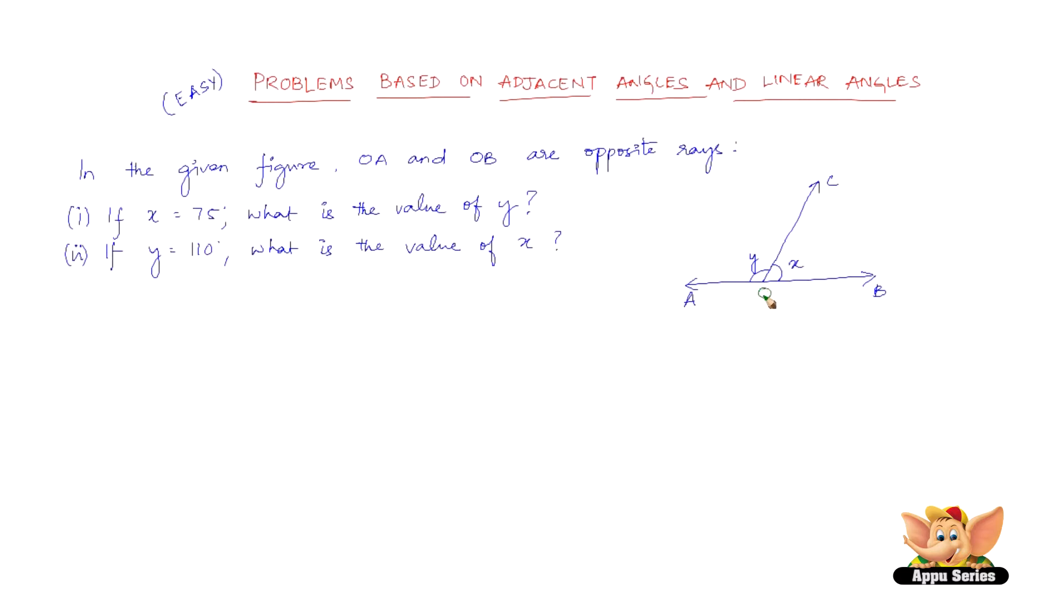Here is the point O. OA and OB are opposite rays. If x equals 75 degrees, from the figure, we have x plus y equals 180 degrees.